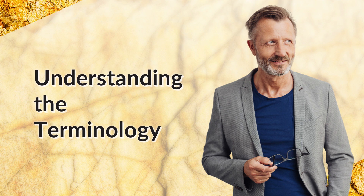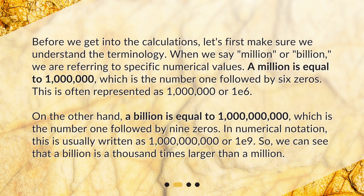Understanding the Terminology. Before we get into the calculations, let's first make sure we understand the terminology. When we say million or billion, we are referring to specific numerical values. A million is equal to 1 million, which is the number 1 followed by 6 zeros — often represented as 1,000,000 or 1E6. On the other hand, a billion is equal to 1 billion, which is the number 1 followed by 9 zeros, usually written as 1,000,000,000 or 1E9. So we can see that a billion is a thousand times larger than a million.